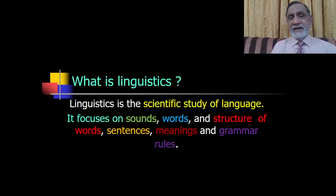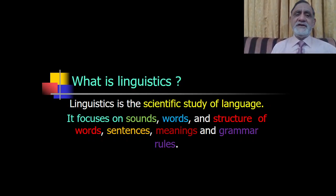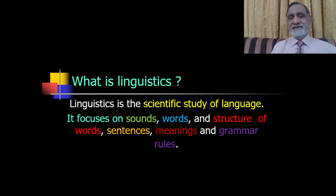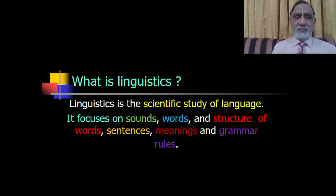We start with: what is linguistics? In very simple terms, linguistics is the scientific study of language. We study how language developed, what are its sounds, what are its words and their formation and the structures of words, then how sentences are made — that is the grammar part — and then the semantics part, that is meanings. We deal with all of this in linguistics.